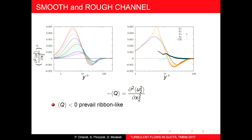Increasing Reynolds number, the strength of the ribbon-like structures increases. But notably, at very high Reynolds numbers like Re_tau = 4000 and 2000, there are not too many changes. Near the wall during transition, the structure changes dramatically. The interaction between ribbon-like and round structures gives the maximum turbulence energy production, which occurs around Y-plus equals 12.